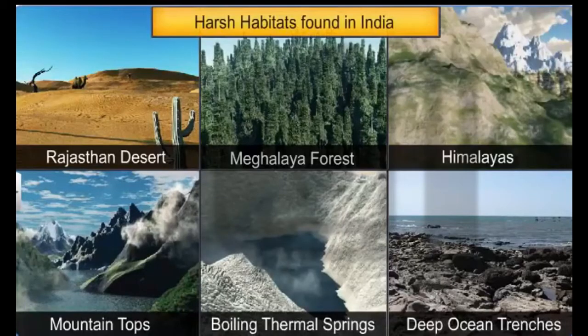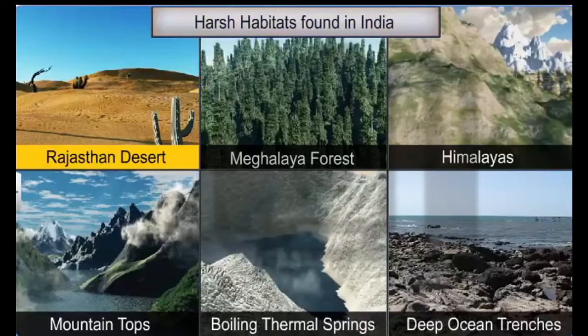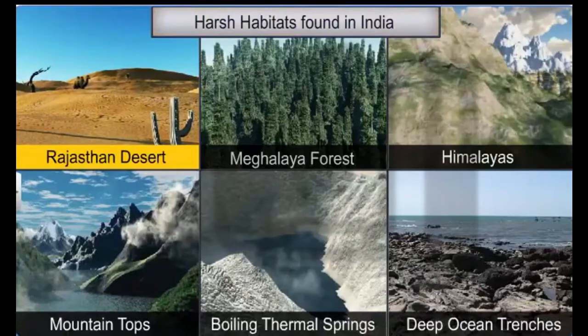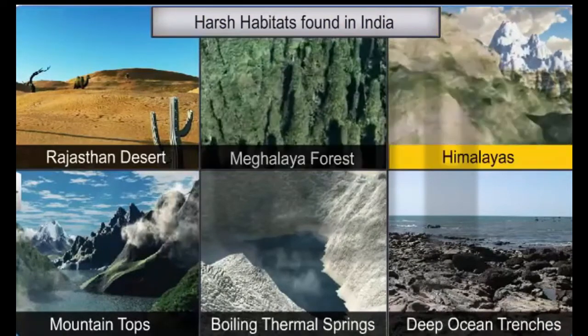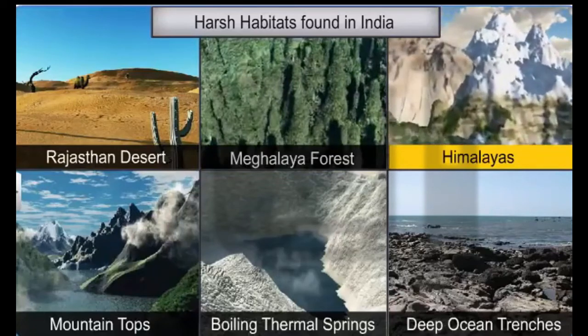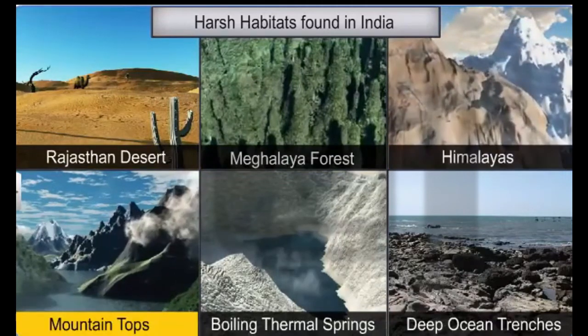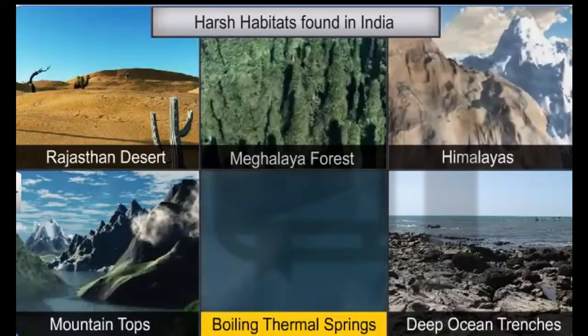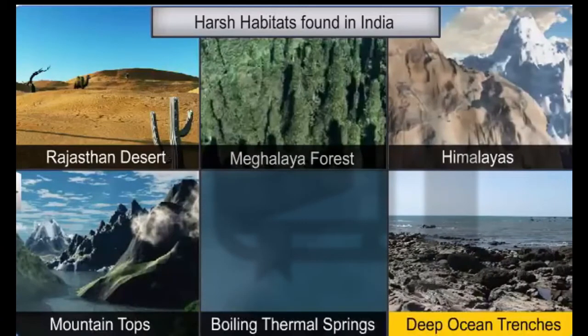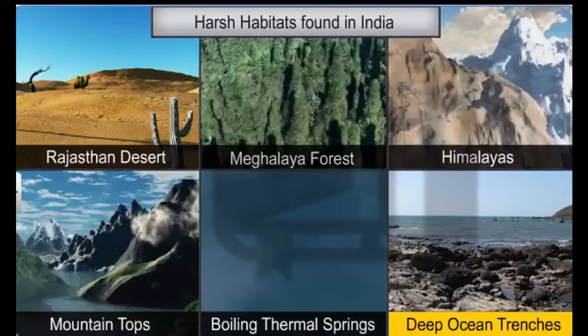While some harsh habitats include the scorching Rajasthan desert, perpetually rain-soaked Megalayan forests, permafrost regions in the Himalayas, mountain tops, boiling thermal springs in Uttaranchal and Sikkim, and deep ocean trenches in the Indian Ocean.